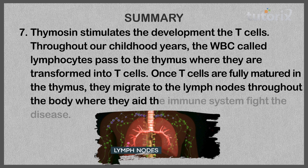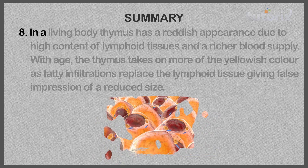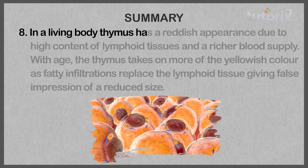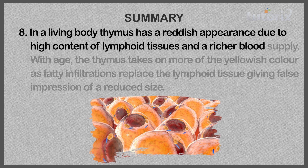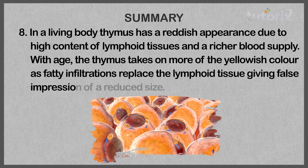In a living body, the thymus has a reddish appearance due to high content of lymphoid tissue and a rich blood supply. With age, the thymus takes on a more yellowish color as fatty infiltrations replace the lymphoid tissue, giving the false impression of a reduced size.